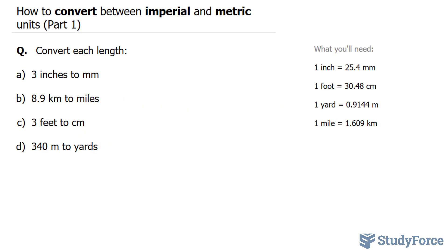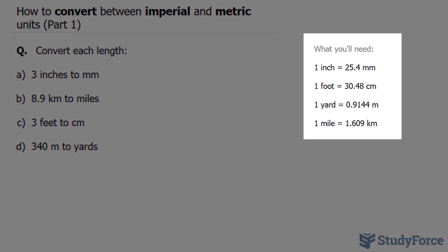In this video, I'll show you four separate examples on how to convert between imperial and metric units. The question reads, convert each length. The first one is A, 3 inches to millimeters. Now to do this, you'll need one of these conversion ratios. Notice that the first conversion ratio goes from inches to millimeters.